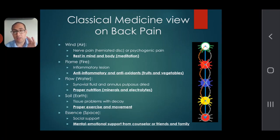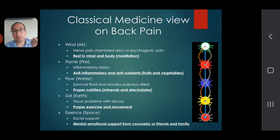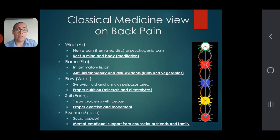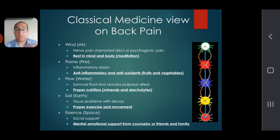If your back pain is based on inflammation — which could be from degenerative disc disease (DDD) or facet joint syndrome — then that means the fire element is imbalanced. Inflammation feels hot, and fat or obesity can contribute to this type of pain. The lifestyle change is to do the opposite: integrate anti-inflammatory foods, supplements, and antioxidants.